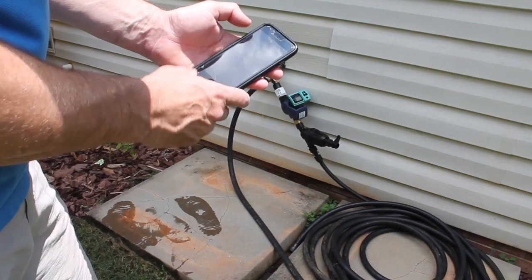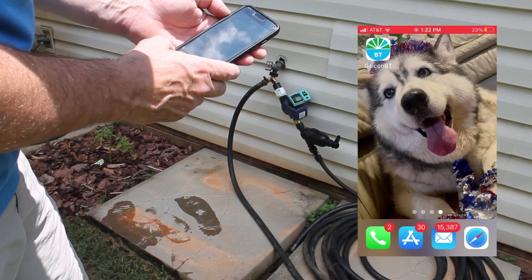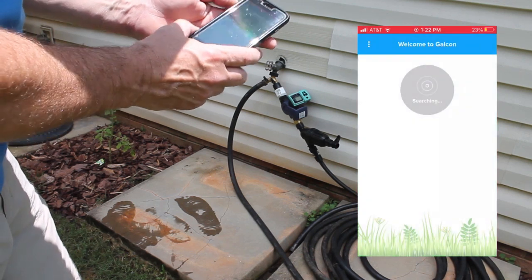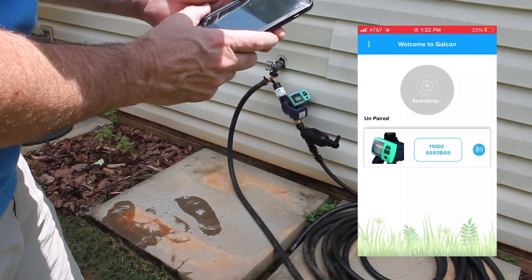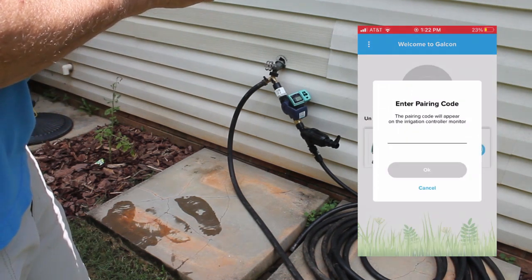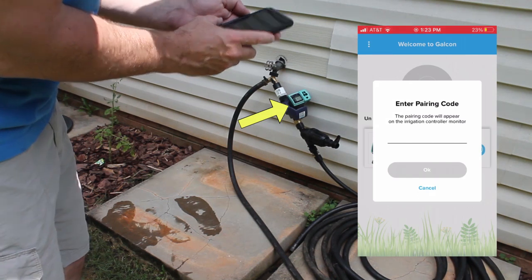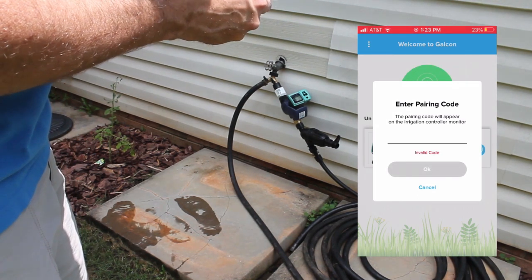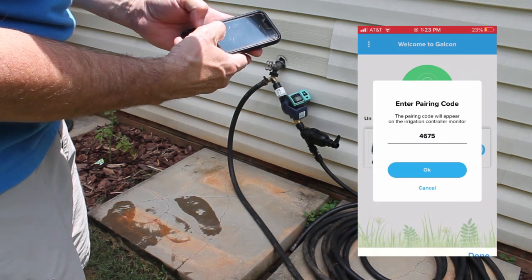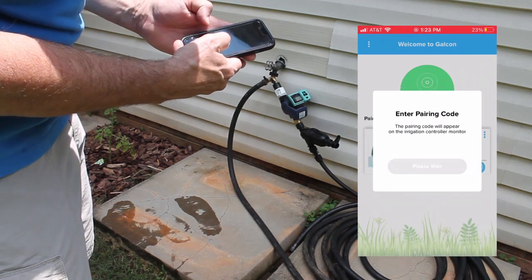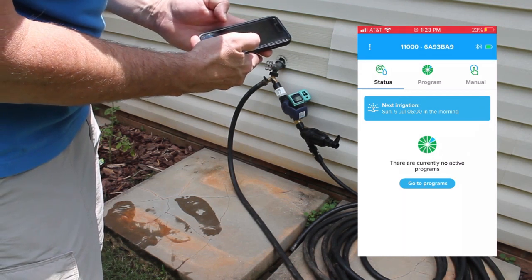I've downloaded the Galkon BT app from the app store. Let's open it up here and see what we've got. It's pulled up our device here automatically and says unpaired. Enter pairing code. The irrigation pairing code will appear on the monitor. It says four, six, seven, five. So let's enter that in. Four, six, seven, five. Done.